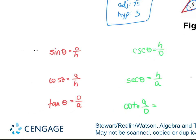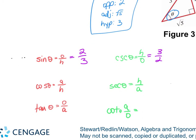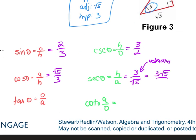Now it's easy to fill everything in. Sine — opposite over hypotenuse — is 2 over 3. Cosecant, the reciprocal, is 3 over 2. Cosine — adjacent over hypotenuse — is square root of 5 over 3. So secant is 3 over the square root of 5. Can you leave it like that? For WebAssign, yes — but for the test you have to rationalize, so it's 3 root 5 over 5.